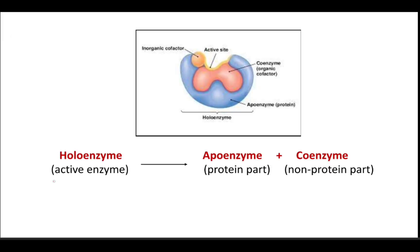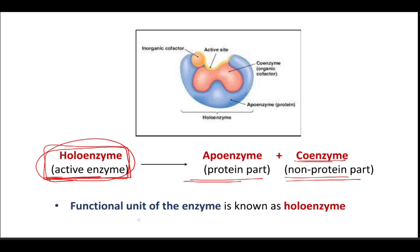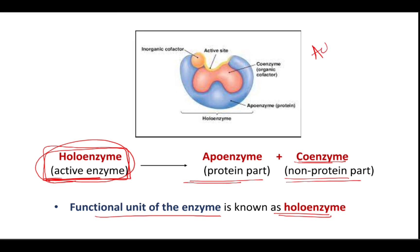The active enzyme is called the holo-enzyme. The holo-enzyme is formed by the combination of the apo-enzyme, which is the protein part, and the co-enzyme, which is the non-protein part. Together, apo-enzyme and co-enzyme combine to form the holo-enzyme, the active enzyme. The functional unit of the enzyme is known as the holo-enzyme.